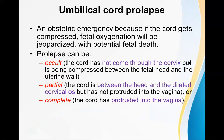One important point you need to understand is the umbilical cord is the structure through which the baby is getting blood. What are the contents of the umbilical cord? Inside the umbilical cord there are two umbilical arteries and one umbilical vein, and there is a jelly-like substance known as Wharton's jelly. These are the important structures.